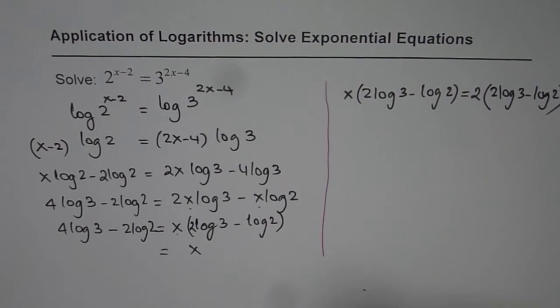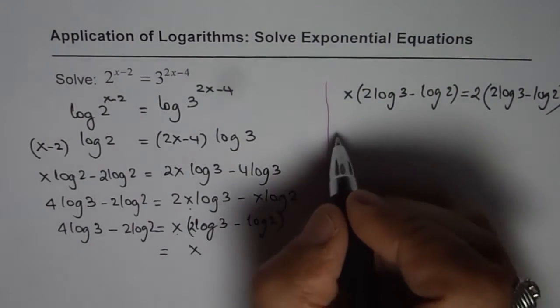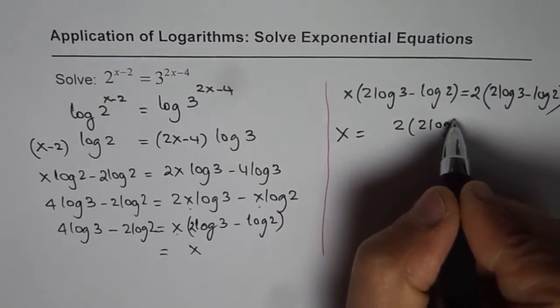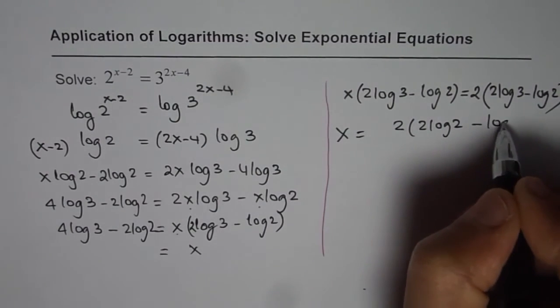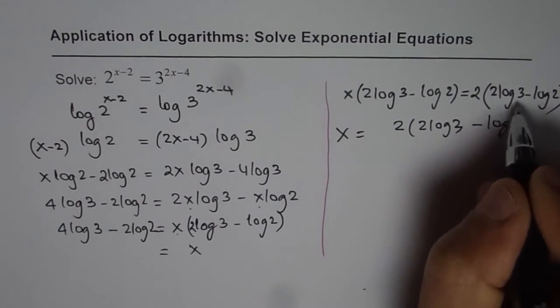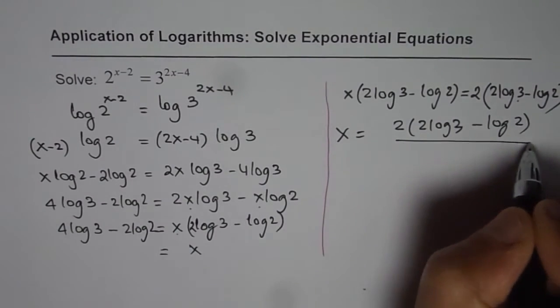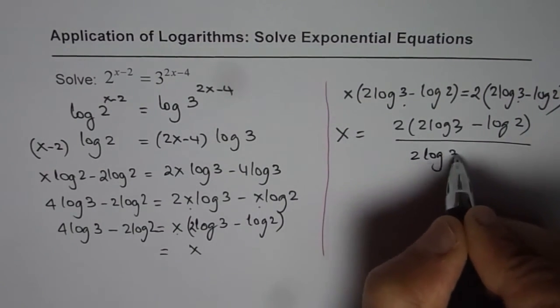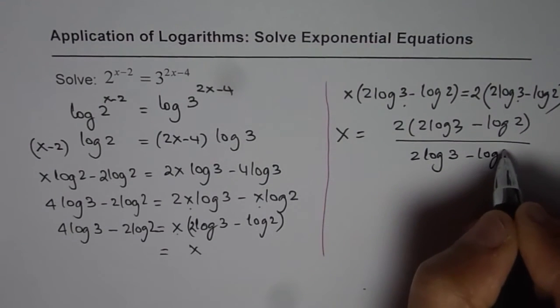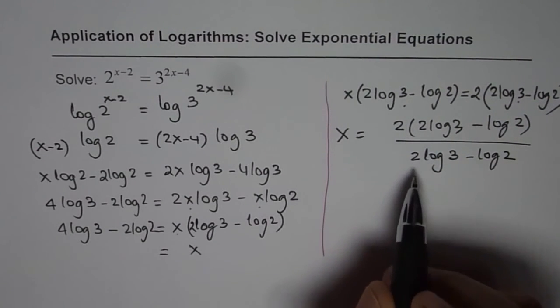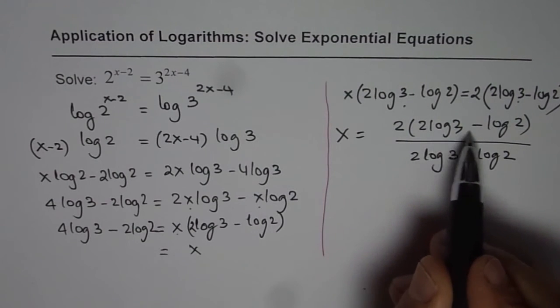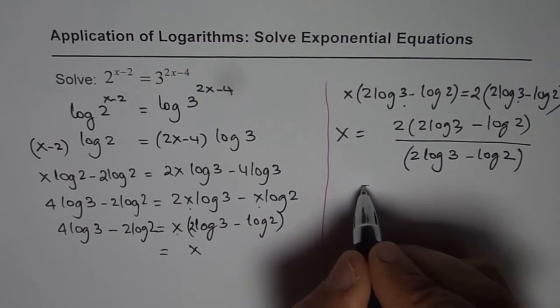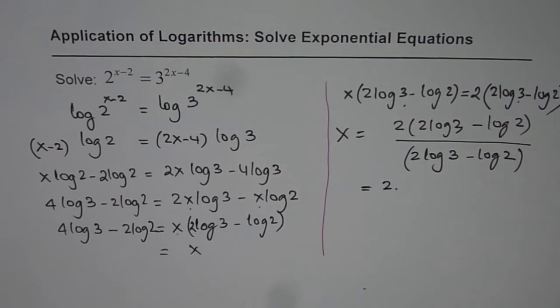Let me push it a bit on the right side. Now x equals 2 times 2 log 3 minus log 2 divided by 2 log 3 minus log 2. So in this case, 2 log 3 minus log 2 gets cancelled off. Do you see that? So we get x equals 2 as our solution.